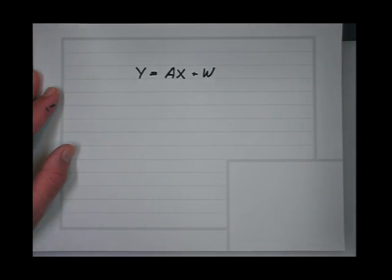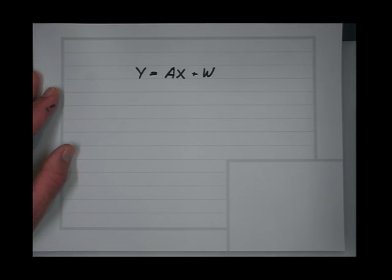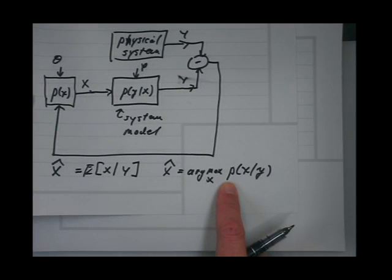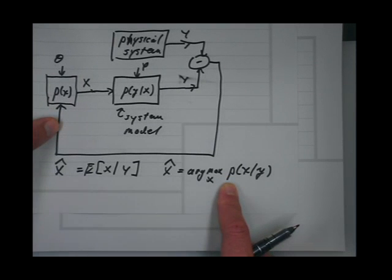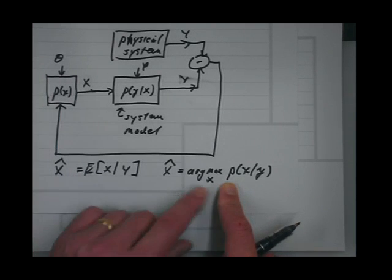So if you don't have the Gaussian distribution for x, which model should we choose for the estimate? In this class, we're mostly going to take the MAP estimate — not because it's necessarily good, but just because you can do it. What people mostly do is choose the MAP estimate for non-Gaussian distributions.